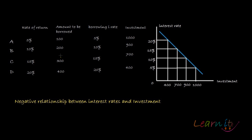In order to carry out project A, I need to borrow 100. For project B, I need to borrow 200. For project C, I need to borrow 300. For project D, I need to borrow 400. At 5%, since all of these projects are feasible, I can borrow 100 plus 200 plus 300 plus 400, which equals 1000. So at 5%, the level of investment is 1000.